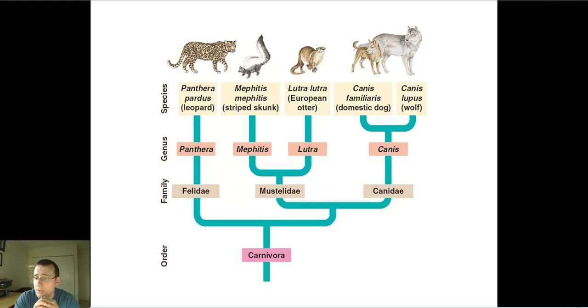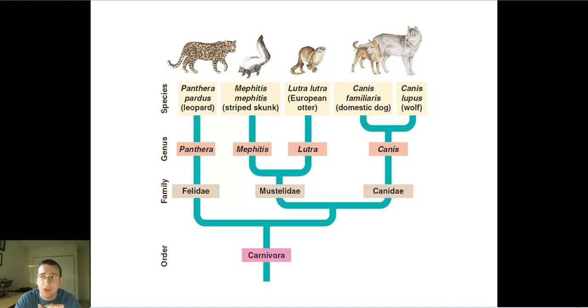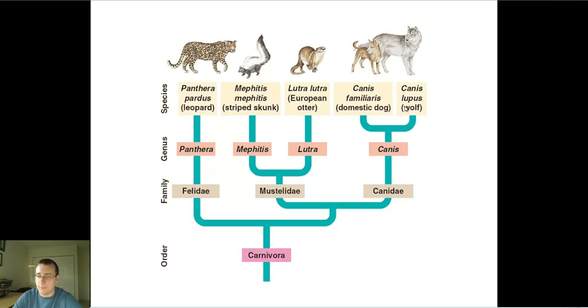Instead, we use trees of life, and there's a name for that type of science. It's called a phylogenetic tree, or phylogeny — the process of creating these phylogenetic trees. We're going to be talking more about that in this video.